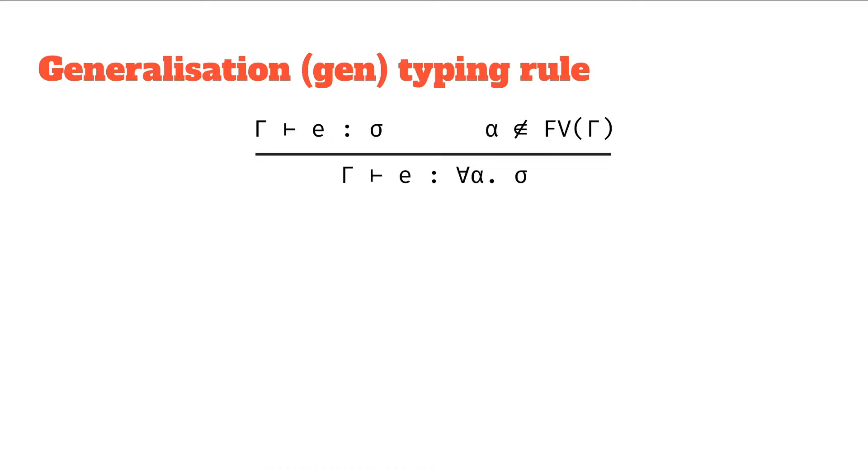As with previous videos, let's try and read through this. So we've got this if-then construct from the rule, and so the first thing is a very simple just assignment following from the context. If from the context gamma, it follows that E has type sigma.